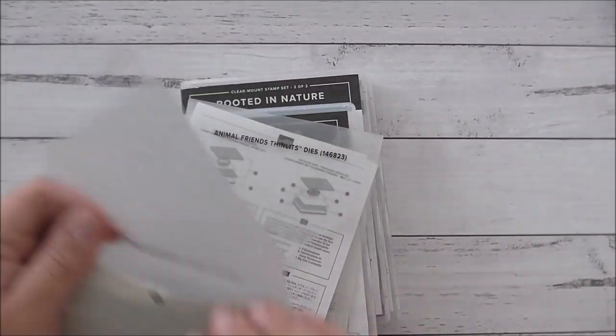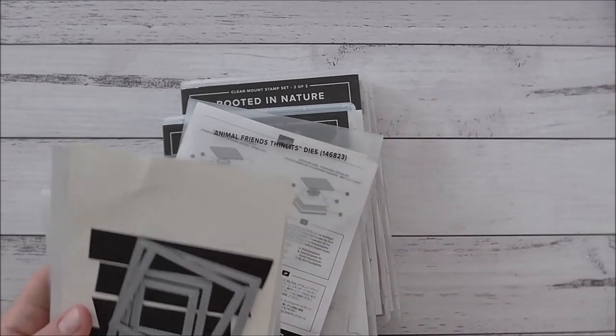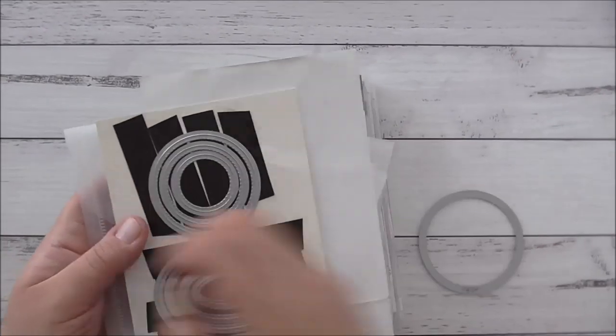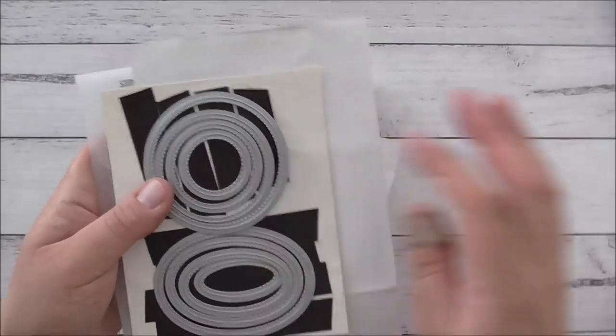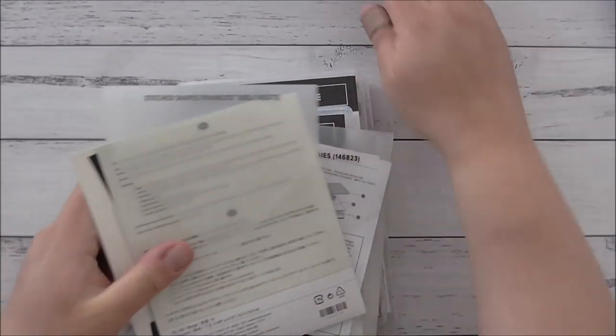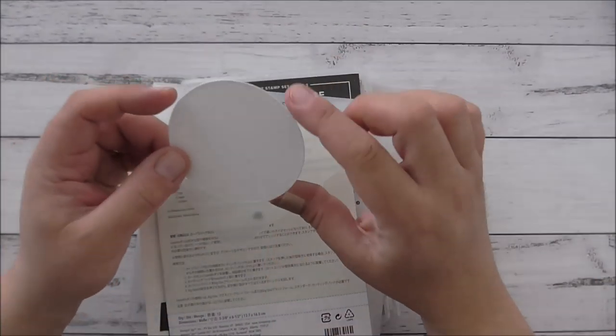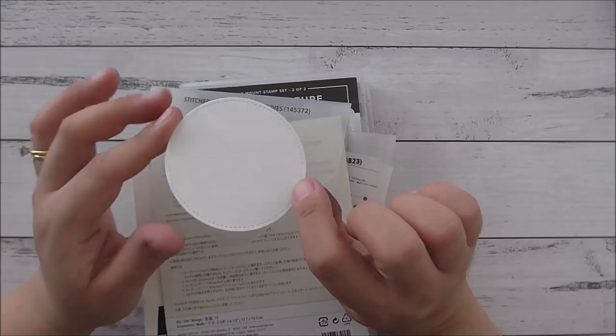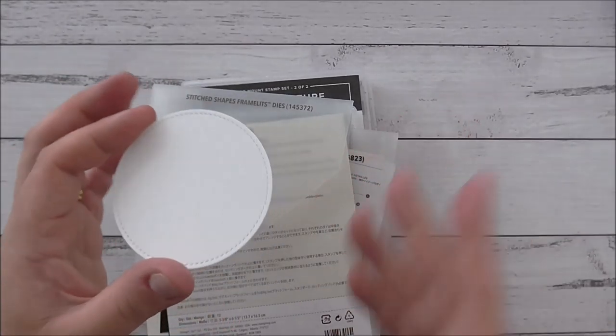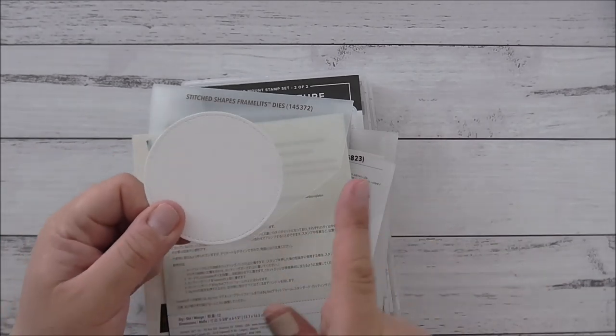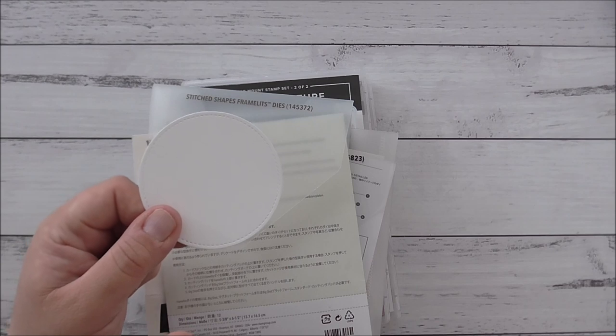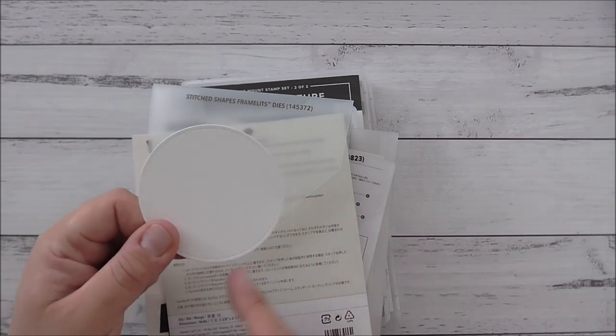The Stitch Shape dies as well. I'm using the largest circle. I have already pre-cut this because I needed this for another project and in the end I decided not to use it. So this is just lying around spare. If you've ever die-cut anything and you've never used it, keep it and then use it for another project. That's what I'm doing here today.